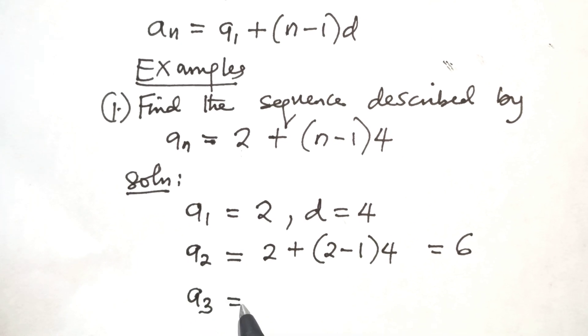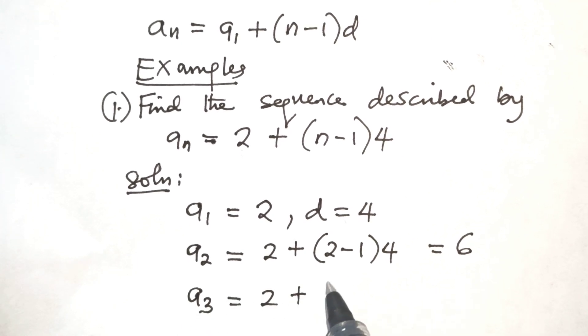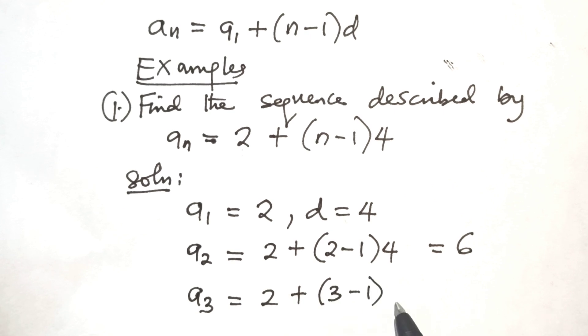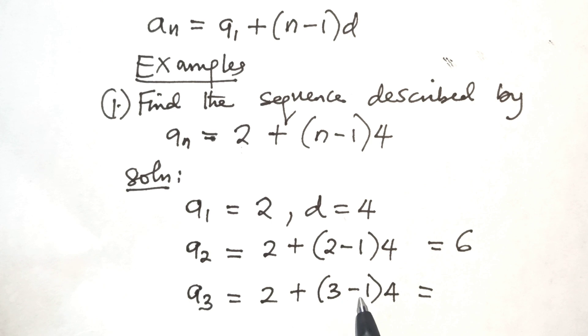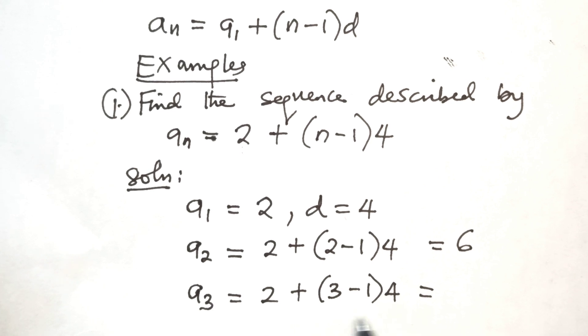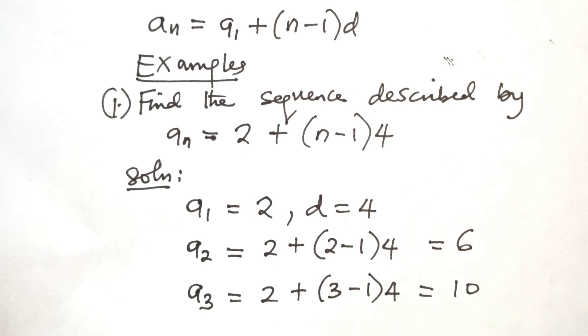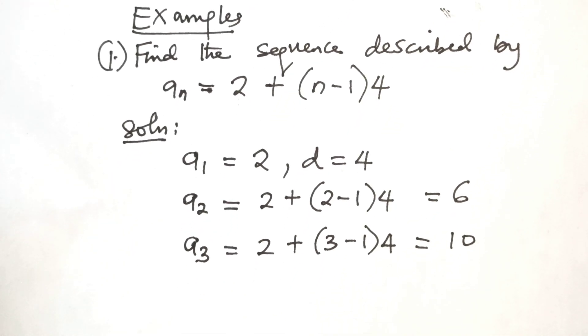The third term is 2 plus 3 minus 1 times 4. 3 minus 1 is 2. 2 times 4 is 8. 8 plus 2, we have 10. The third term is 10.